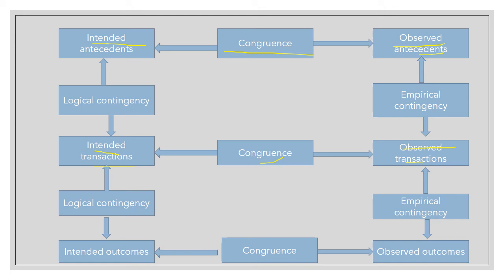Logical contingency. Intended outcomes and observed outcomes congruence — harmony between what the outcomes were intended and what outcomes have been observed. The difference between the two is observed.